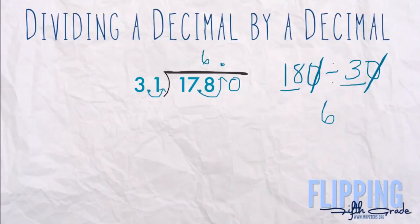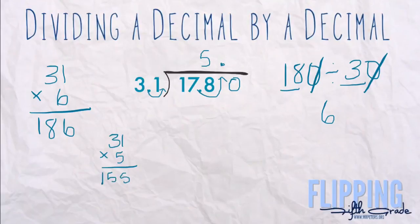And then off to the side you always want to do this off to the side - you're going to do your 31 times 6. So you get an answer that's greater. All right, so now I must go back and erase my answer and we're going to go with a 5 here.